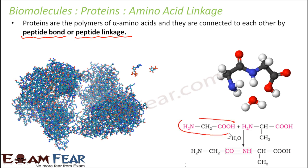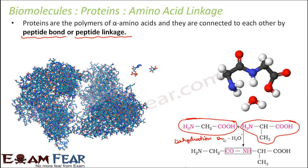So you have one amino acid here and another amino acid here. The first has one amine group, one carboxyl group, and a methyl alkyl group — so this is alanine. When two amino acids join together and one molecule of water is removed, that is dehydration synthesis. From one side OH is removed and from the other side H is removed.